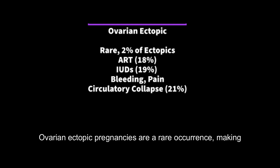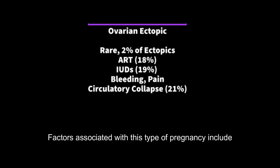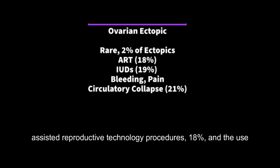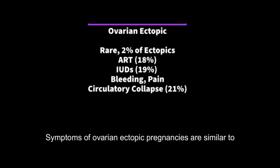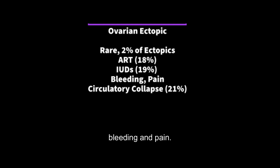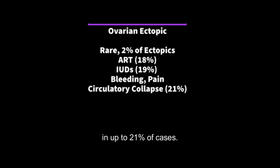Ovarian ectopic pregnancies are a rare occurrence, making up only 2% of all ectopic pregnancies. Factors associated with this type of pregnancy include assisted reproductive technology procedures (18%) and the use of intrauterine devices (IUDs) (19%). Symptoms of ovarian ectopic pregnancies are similar to those of tubal ectopic pregnancies and may include bleeding and pain. In some cases, circulatory collapse has been reported in up to 21% of cases.